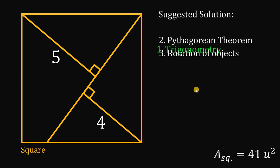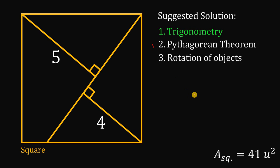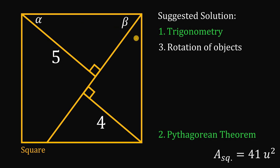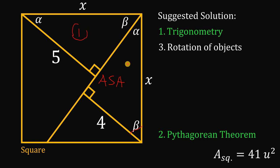How about using the Pythagorean theorem? Let's call this angle alpha, this is beta, we know this is alpha, and this angle right here is also beta. Let x again be the side length of this square. Using the angle-side-angle postulate, we can say that these two right triangles are congruent to one another, because both have alpha, x, and beta. So these two right triangles are congruent.